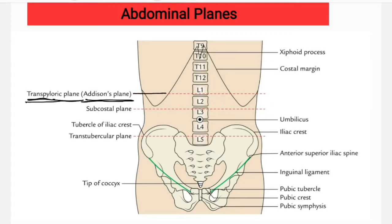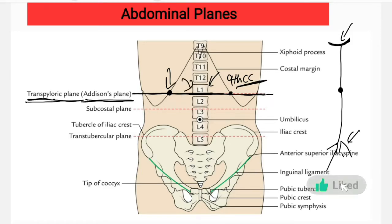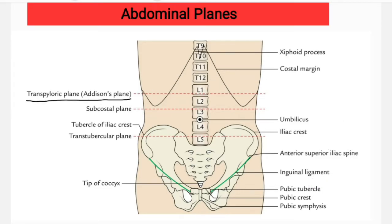This plane is an imaginary horizontal line taken at the midpoint of the line from the supra-sternal notch to the pubic symphysis. Anteriorly, it passes through the ninth costal cartilage, and posteriorly it passes through the lower border of the L1 vertebra.